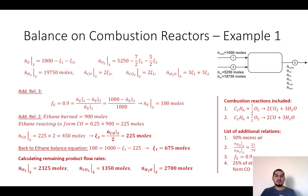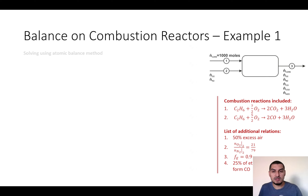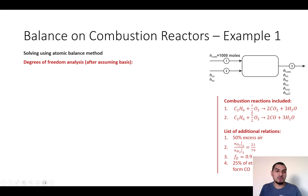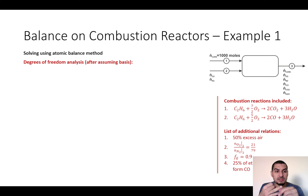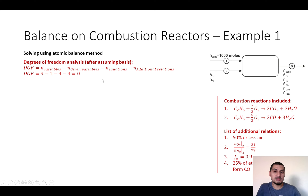Now let's solve using the atomic balance method and show the differences. The basis is again 1000 moles for stream 1. For the degrees of freedom: 9 variables, 1 given variable, 4 balance equations (one per element: C, H, O, N), and 4 additional relations. DoF = 9 − 1 − 4 − 4 = 0, the same result as before.